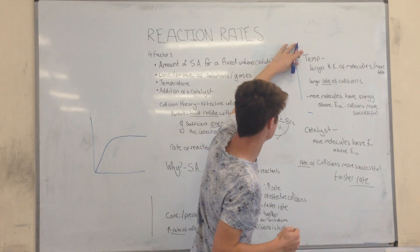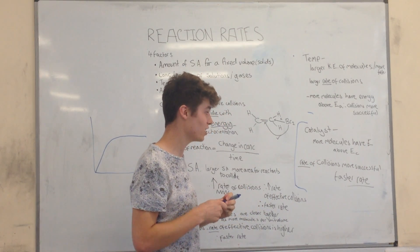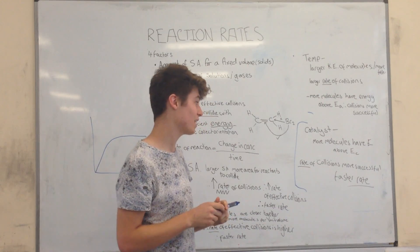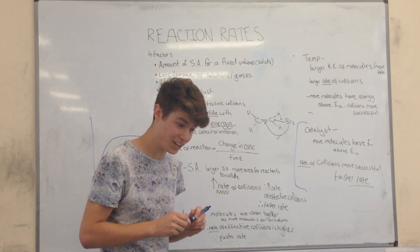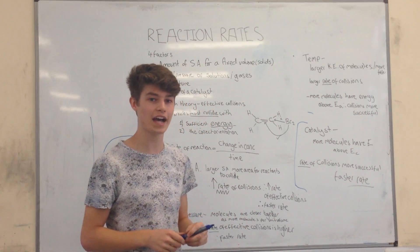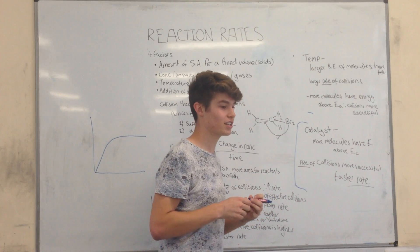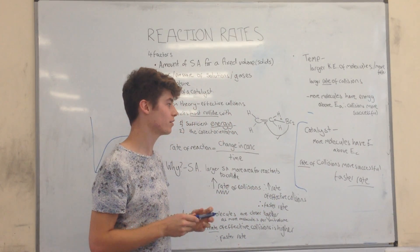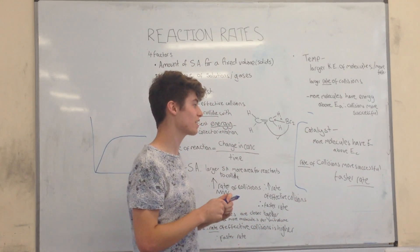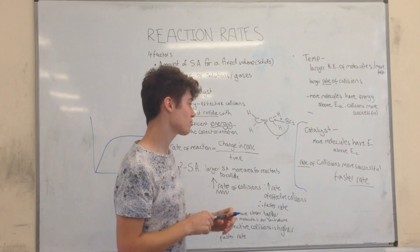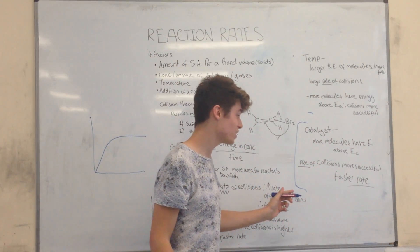The final factor is the addition of a catalyst. A catalyst is defined as a substance that will provide an alternative route for the reactants with a lower activation energy. The activation energy is the minimum energy required for a reaction to occur. If there's a lower activation energy, there's going to be a larger proportion of molecules that will exceed that activation energy. As a result, the collisions will be more successful, and this will increase the rate of reaction.